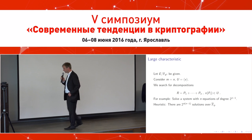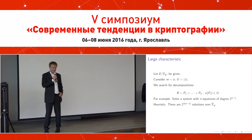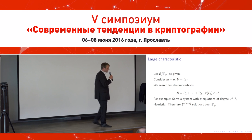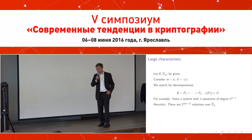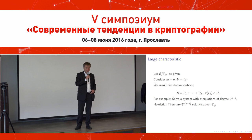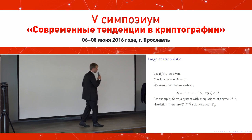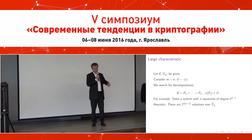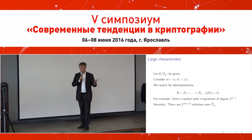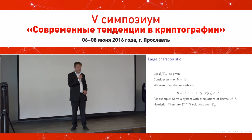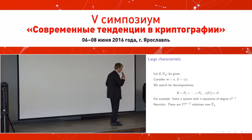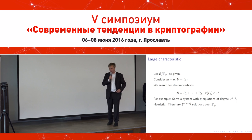Coming back to the elliptic curve discrete logarithm problem, I want to discuss two different cases: first, large characteristic, and second, characteristic 2. In large characteristic — which is where my theorem applies — you cannot use the field equations because they are so large you will never reach the required degree in the polynomial system computations (done by Gröbner bases, or theoretically by resultants).